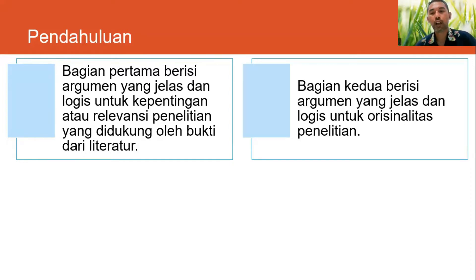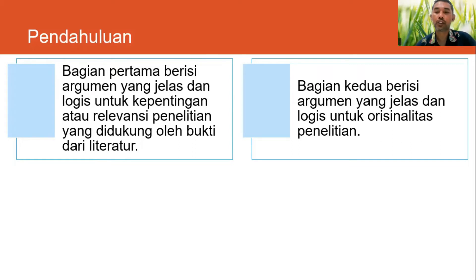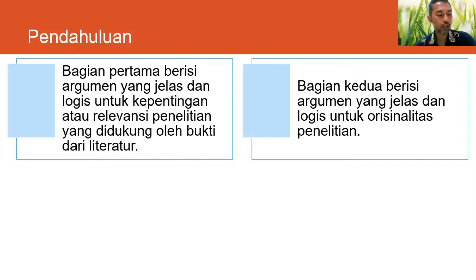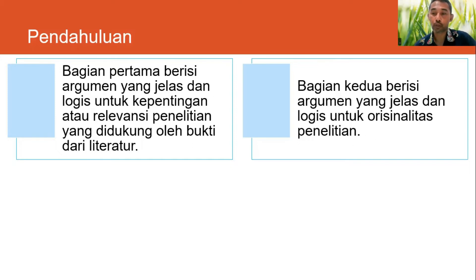Bagian kedua dari pendahuluan adalah berisi argumentasi yang jelas dan logis untuk originalitas penelitian. Kita perlu meringkas literatur-literatur terkait apa yang sudah diketahui tentang pertanyaan atau topik tertentu, lalu memperjelas kesenjangan pengetahuan yang akan dibahas. Argumen itu juga harus didukung oleh sumber-sumber literatur. Di deskripsi saya akan cantumkan link video yang membahas bagaimana menemukan riset gap menggunakan NVivo.